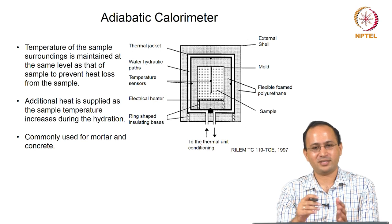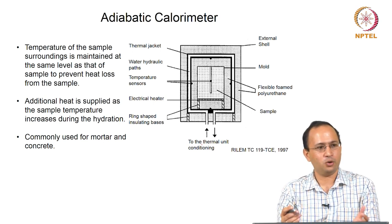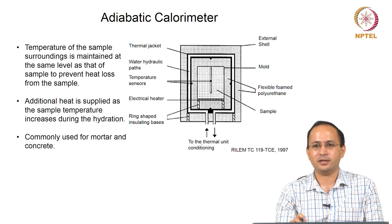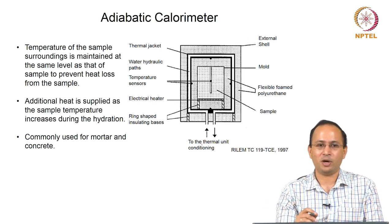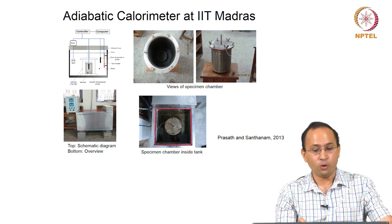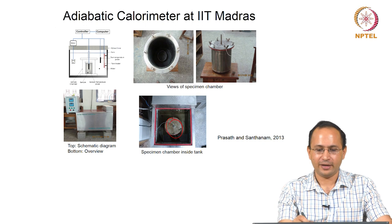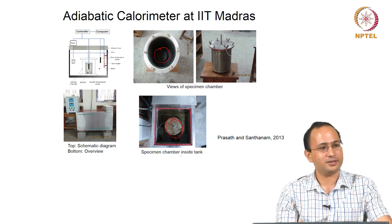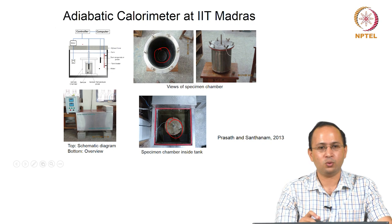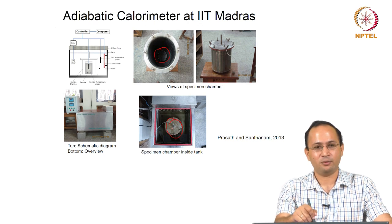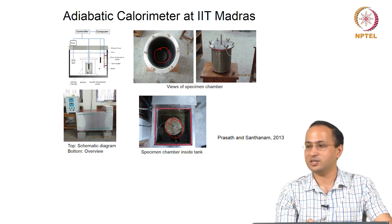In the adiabatic calorimeter, you have the sample surrounded by a water bath. Suppose the concrete temperature is increasing by 1 degree — you also increase the water bath temperature by 1 degree, minimizing heat loss. We saw the kind of calorimeter at IIT Madras: the sample is in a sample chamber, that chamber is in a water bath, a controller controls the water bath temperature, and a sensor in the sample measures temperature and triggers the controller.